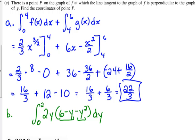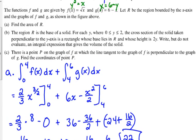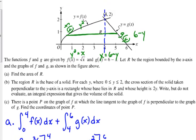C says there is a point P on the graph of F, at which the line tangent to the graph of F is perpendicular to the graph of G. Find the coordinates of point P. There's some point P. I don't know where it is. It's probably actually further down, closer to the Y axis. How do I know that? Because it says the line tangent to the graph is perpendicular to the graph of G. Well, G is a straight line.